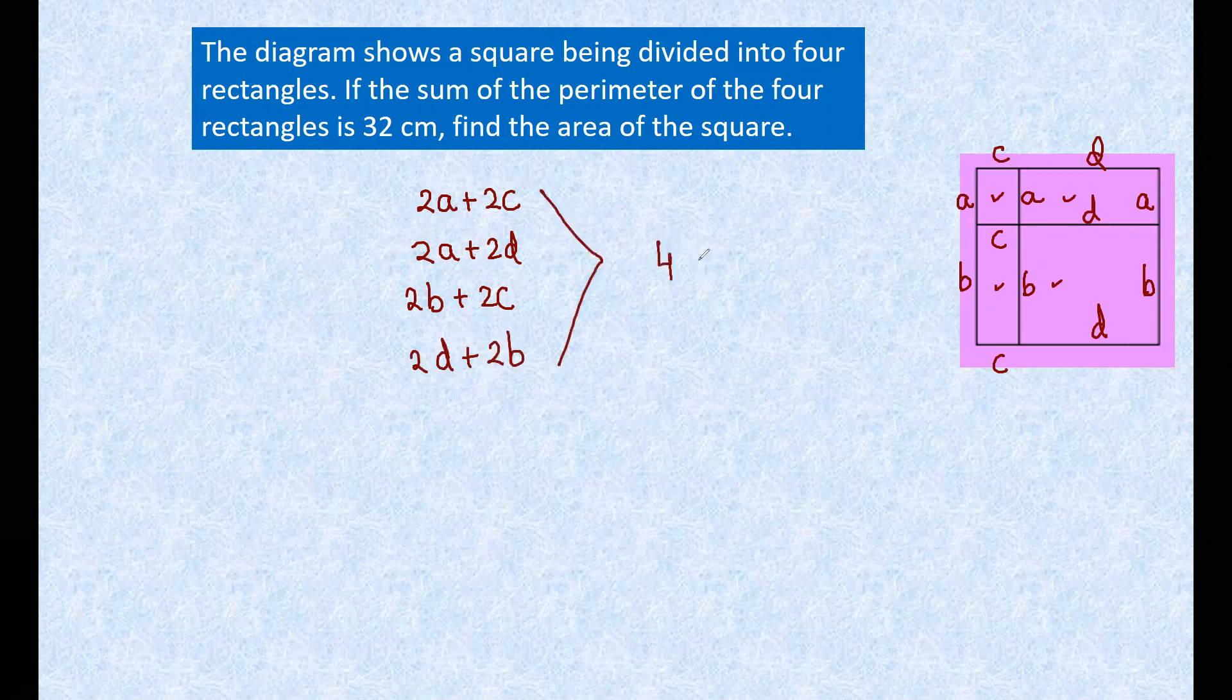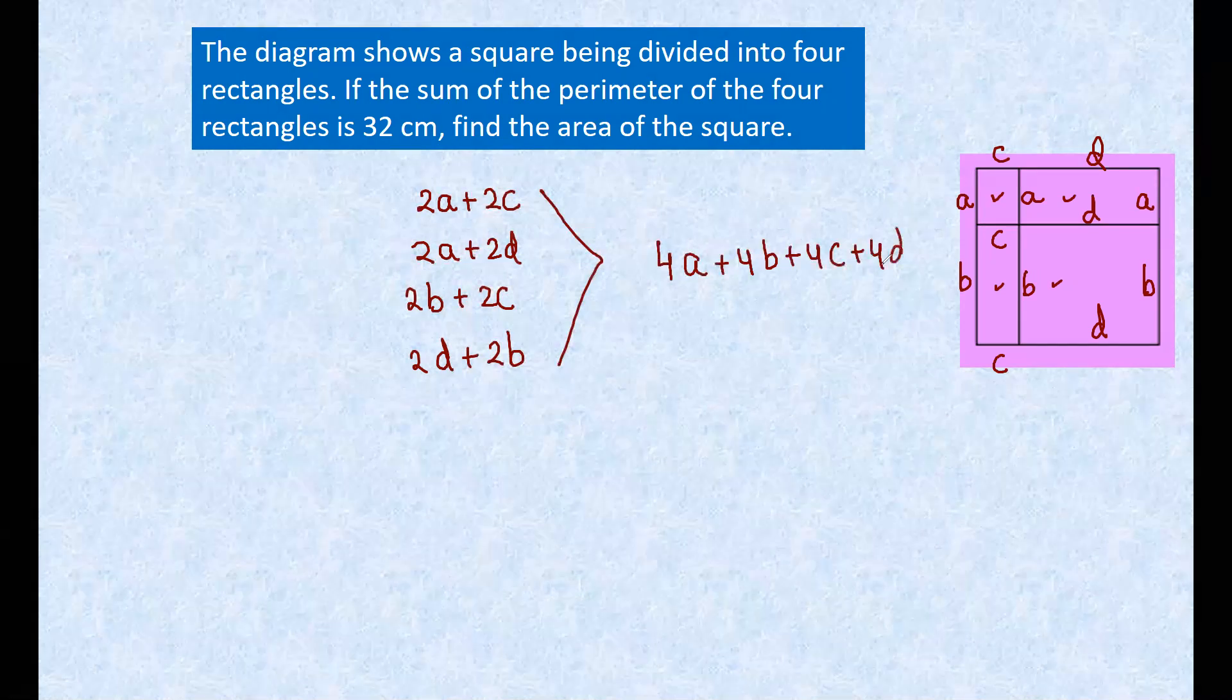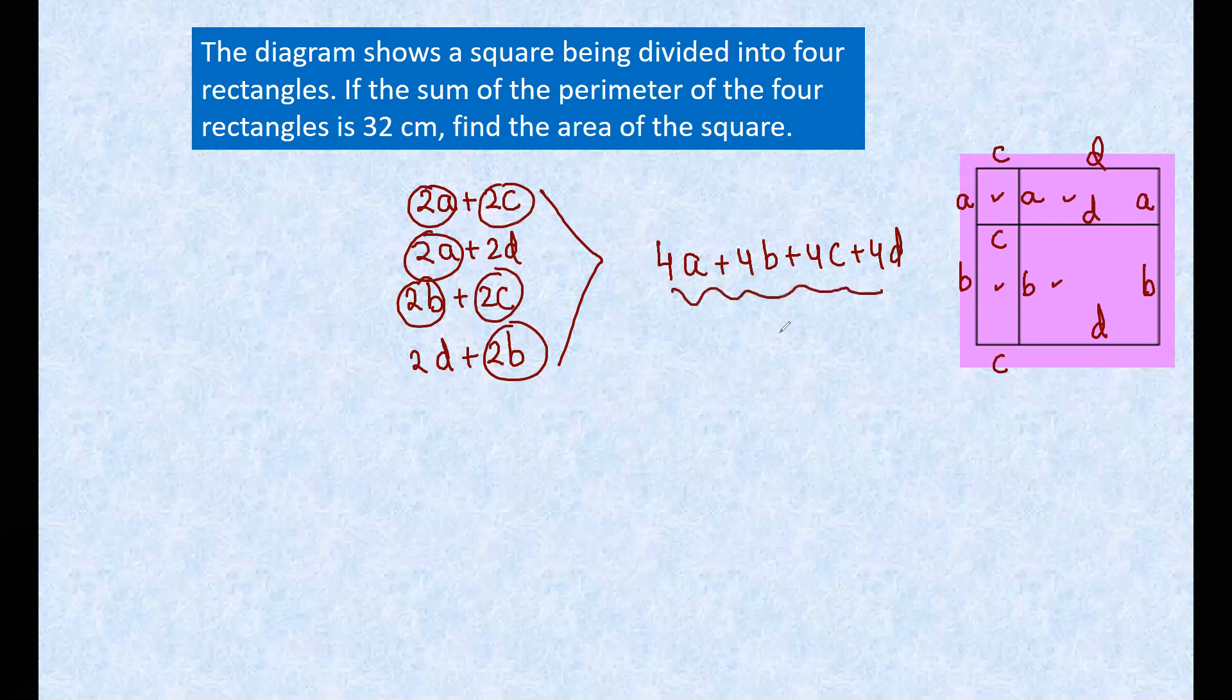So you got 4a plus 4b plus 4c plus 4d. See, everyone has two pairs. Now we got 4a plus 4b plus 4c plus 4d, this is given as 32, right? Because perimeter is given, and perimeter is the sum of boundaries. So we got a plus b plus c plus d as 8. Now you see, a plus b is equal to c plus d.